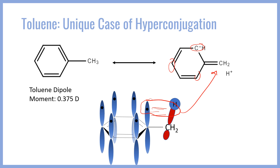As a result of the proton partially dissociating, the methyl end carries a partial positive charge, while the benzene ring — with the ortho and para positions carrying formal negatives — carries a partial negative charge. The molecular dipole for toluene therefore points towards the ring, arising entirely from this unique circumstance of hyperconjugation.